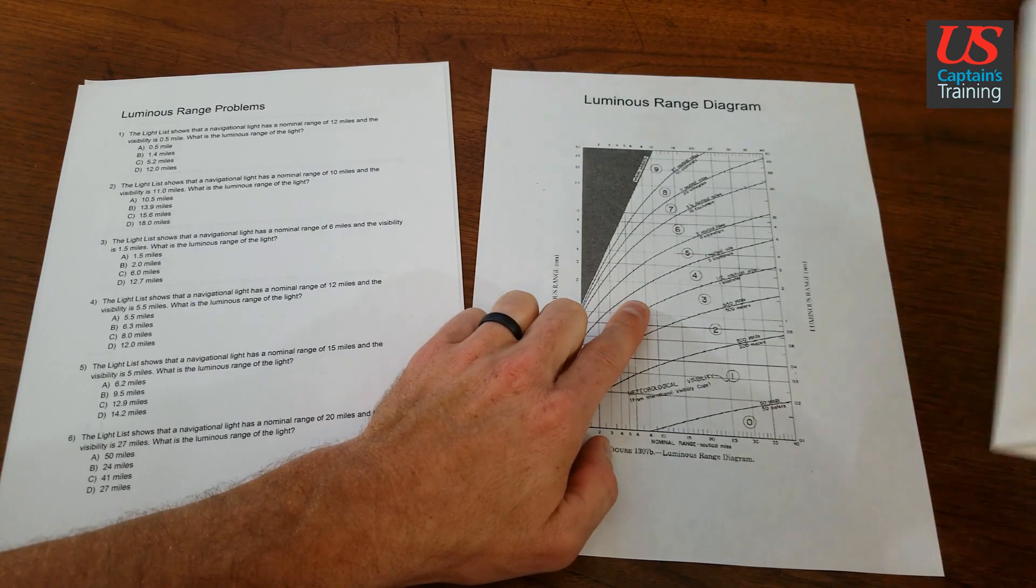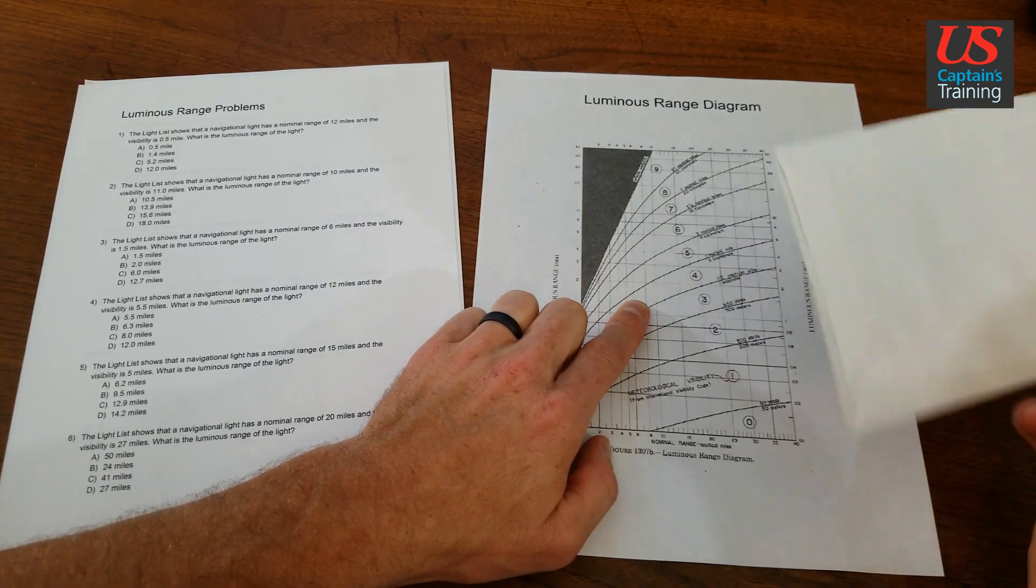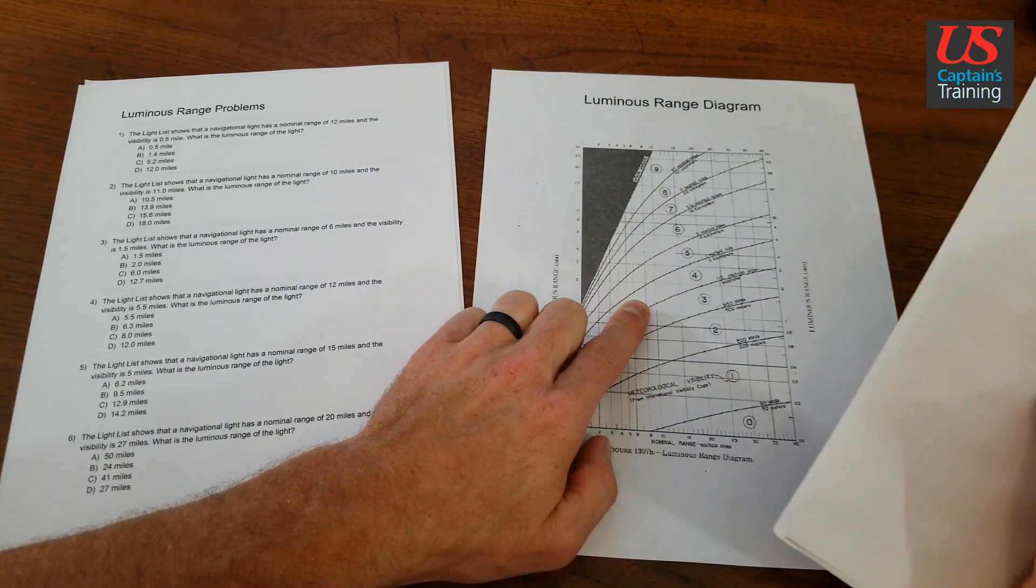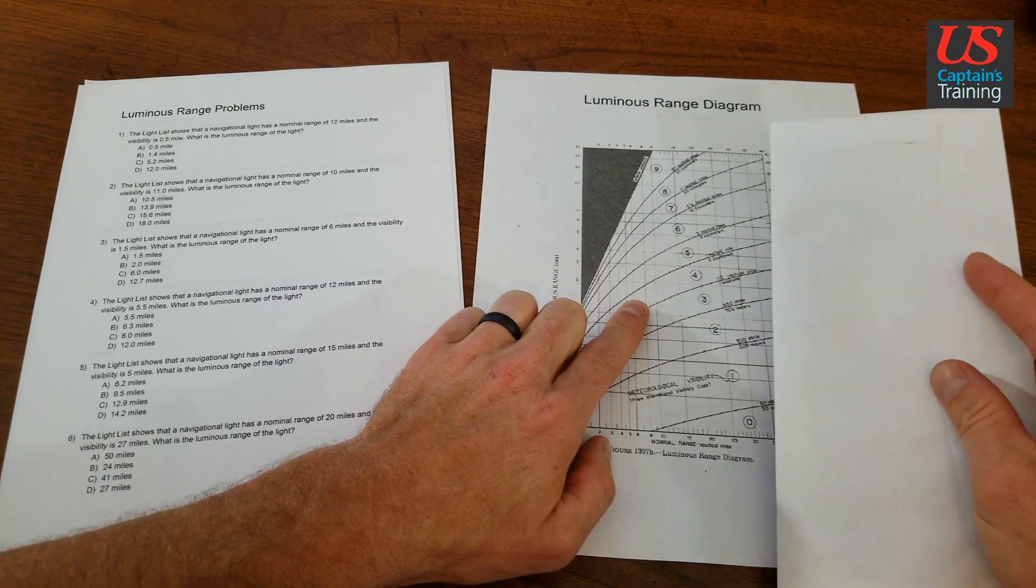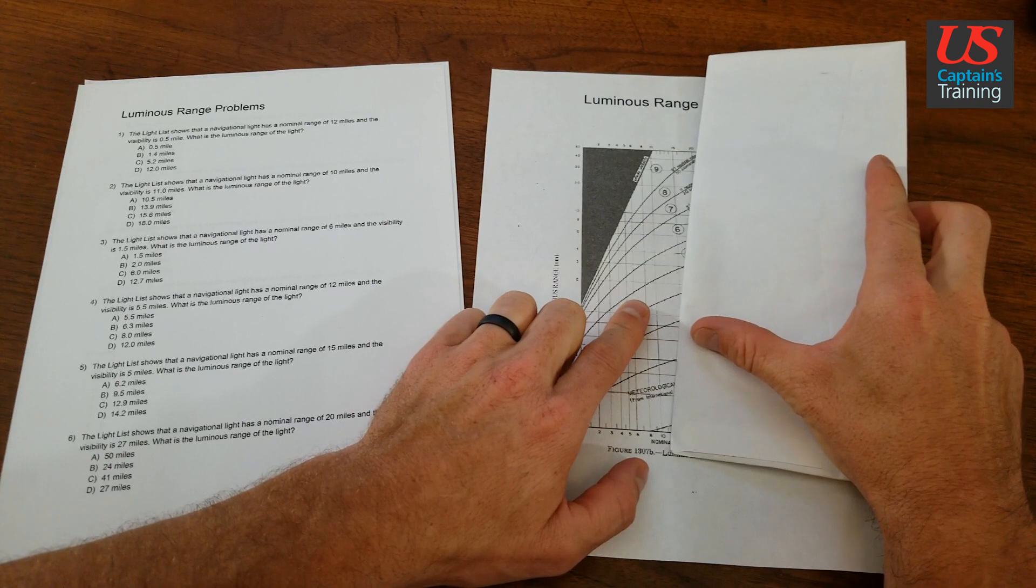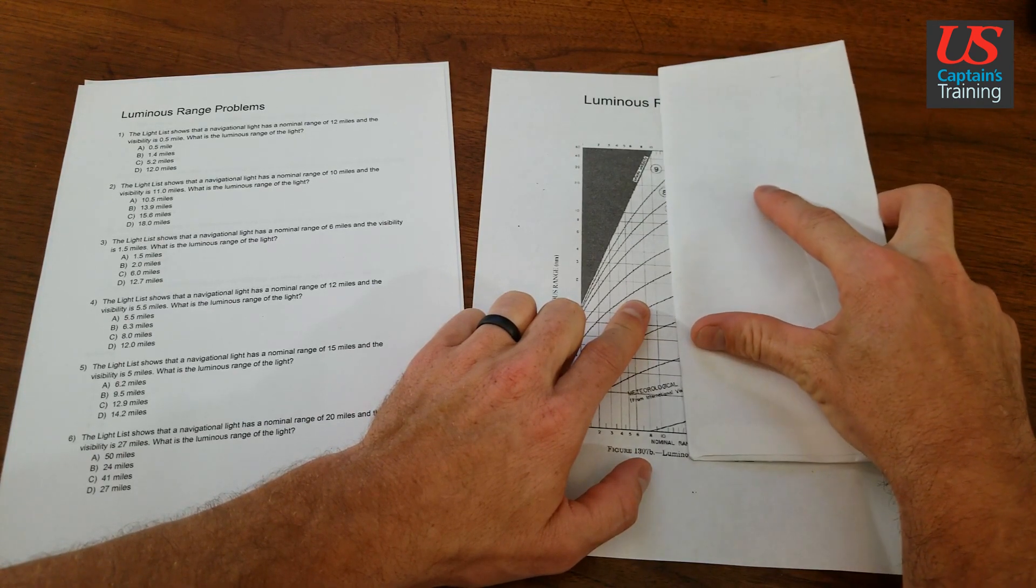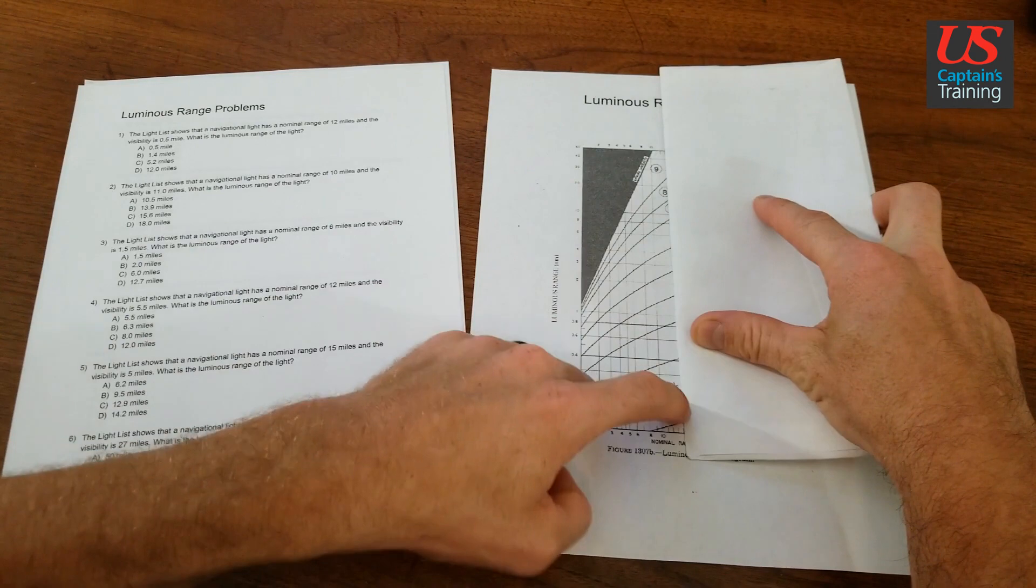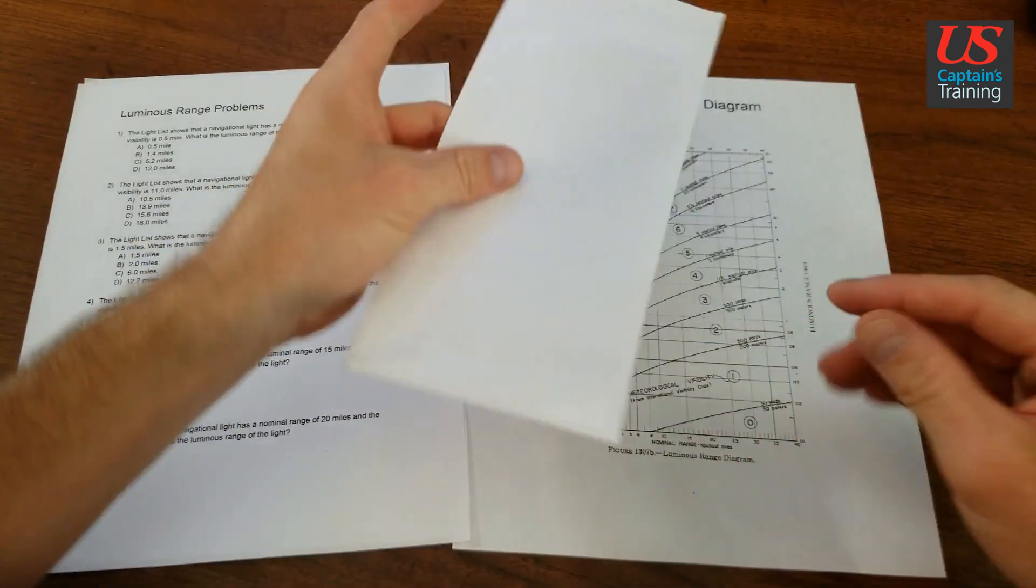It helps if you use an envelope, works pretty well. Any straight edge or ruler would work too. Let's say the nominal range was 12, you can get more accurate. 11, 12, and then you can draw that line and see where it intersects the curves. Probably easier this way.